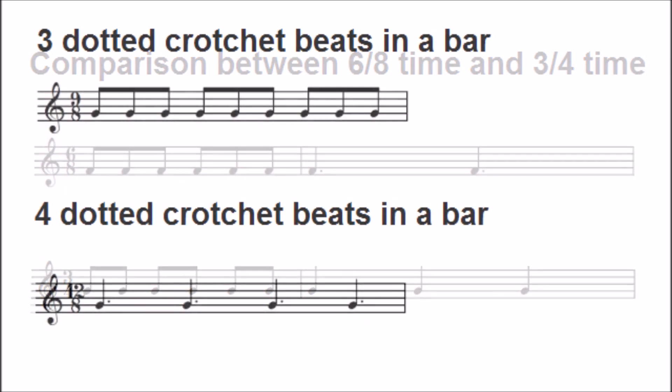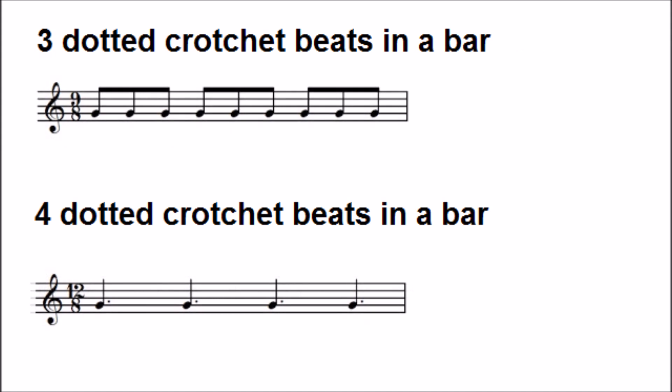Some other time signatures that you might come across at grade 3 ABRSM and Trinity are 9-8 time, which means three dotted crotchet beats in a bar, and 12-8 time, four dotted crotchet beats in a bar.